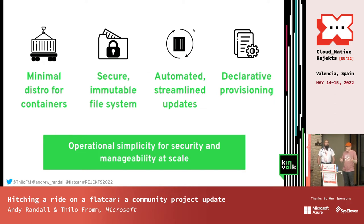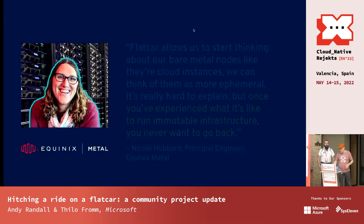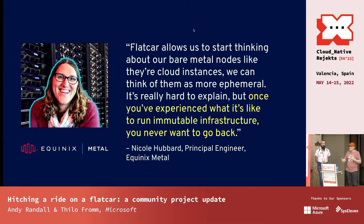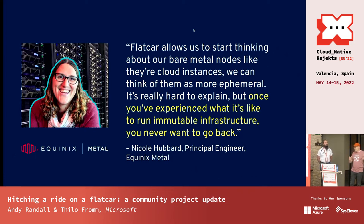What this all adds up to is operational simplicity for security and manageability when you're deploying at scale. Deploying one or two nodes in your home lab running Kubernetes, probably not a problem. When you're deploying hundreds or thousands, these kind of issues really come to bite you. In fact, we did a case study — Equinix Metal actually migrated their bare metal cloud control plane into Kubernetes and used Flatcar as the underlying layer. It was almost like night and day in terms of how it was to manage the traditional full Linux distribution they were using before versus how they manage on Flatcar. They just don't think about the OS anymore, and they can focus on the workloads they're deploying on top.